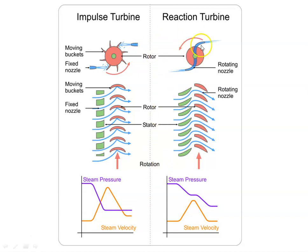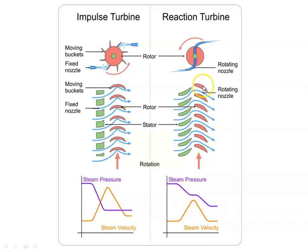Now we look at the reaction turbine. Here we have fixed blade and moving blade. The pressure drop takes place both in the fixed blade and the moving blade. The fixed blade acts as a nozzle, and the rotating blade is also acting as a nozzle — it is called a rotating nozzle. A nozzle decreases the pressure and increases the kinetic energy. So in the reaction turbine, the pressure drop takes place both in the fixed blade and the moving blade.